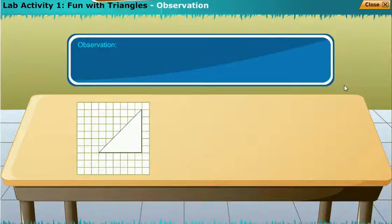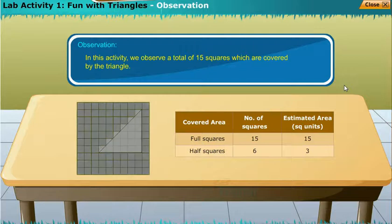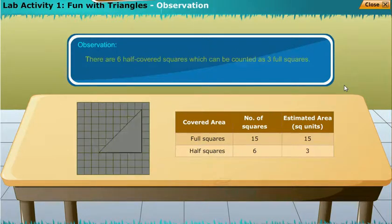Observation: In this activity, we observe a total of 15 squares which are covered by the triangle. There are six half covered squares which can be counted as three full squares.